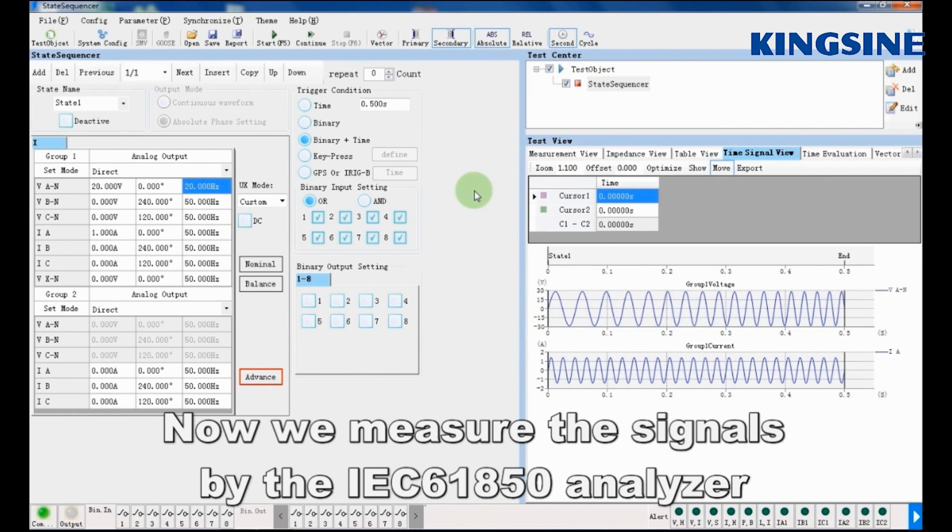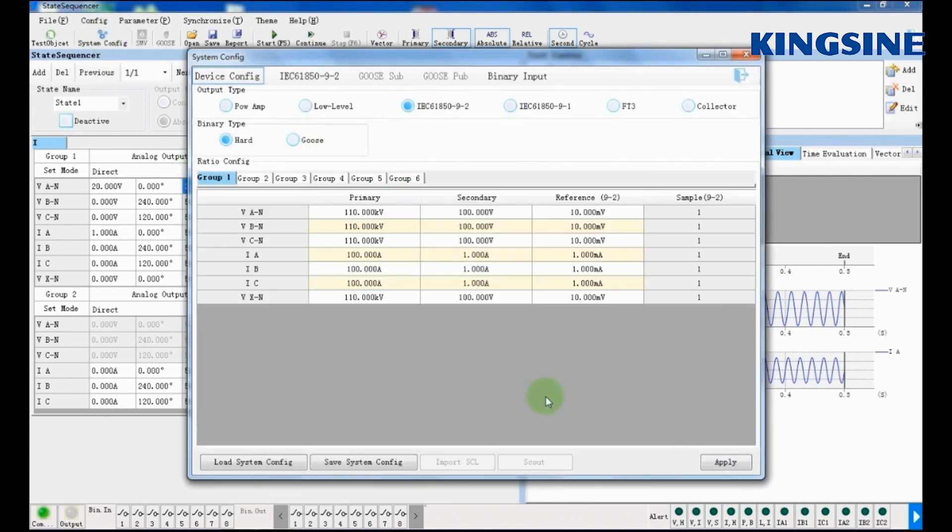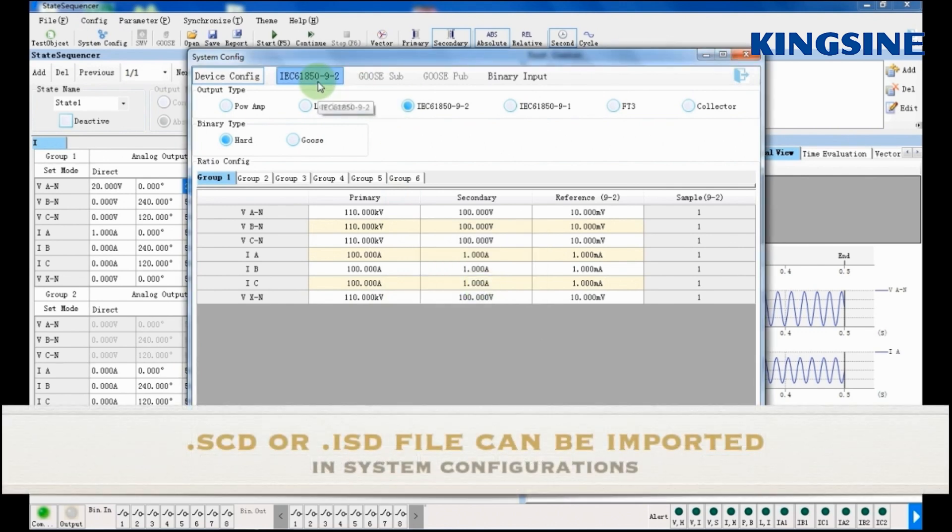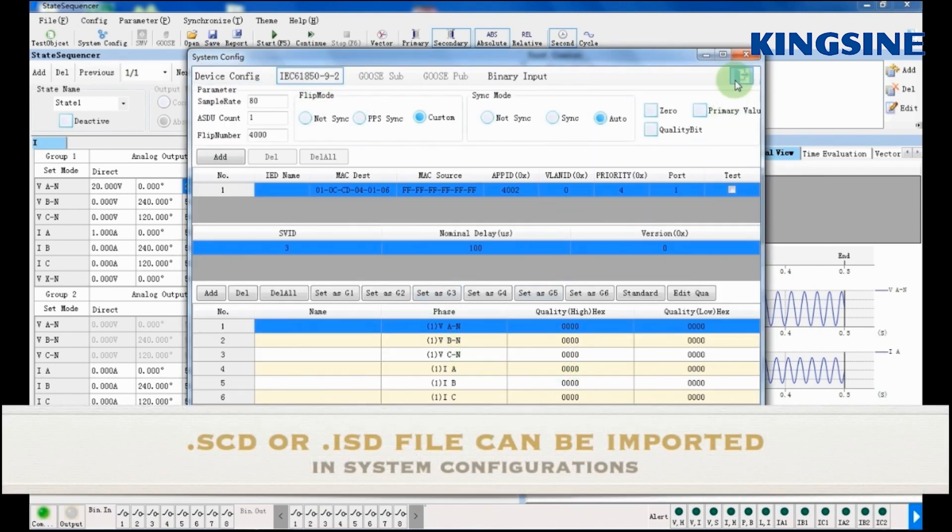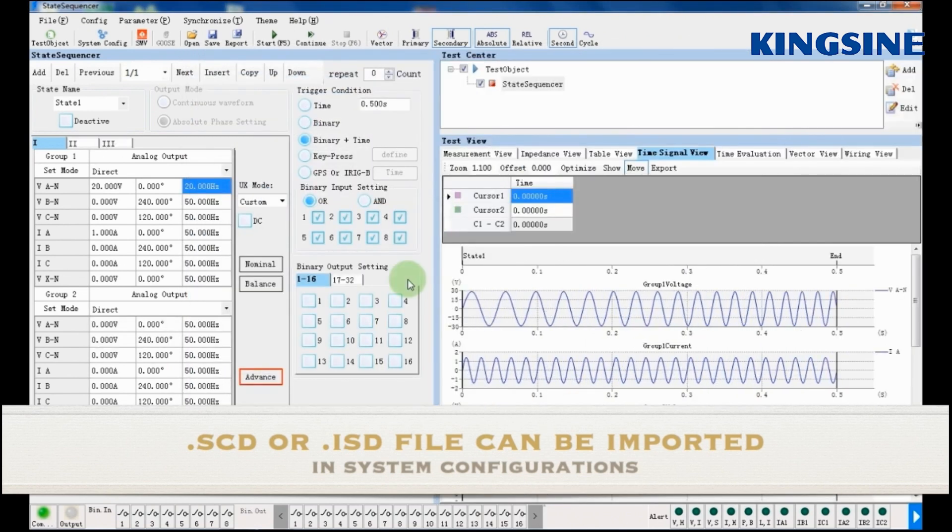Let's enter the system configuration and select IEC 61850-9-2. Here, in the system configuration, we can enter an existing SCD or IED file of power system and later export those settings into the relay test kit.